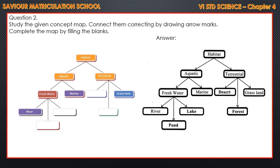So, to summarize the concept map: habitat is classified into two — aquatic and terrestrial. Aquatic is classified into freshwater and marine. Terrestrial is classified into desert, forest and grassland. Freshwater is again classified into three: river, pond and lake. You have to fill in pond and lake in the blanks. Do you understand this, children? Yes, thank you.